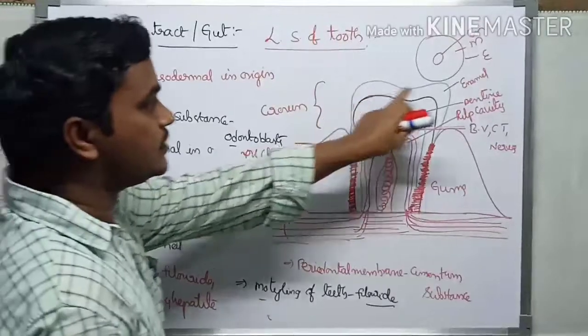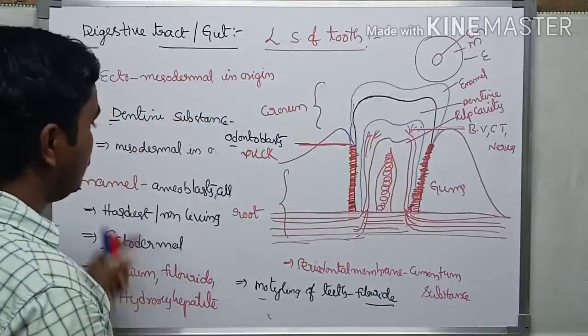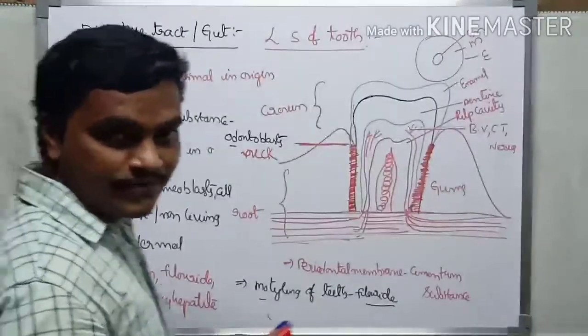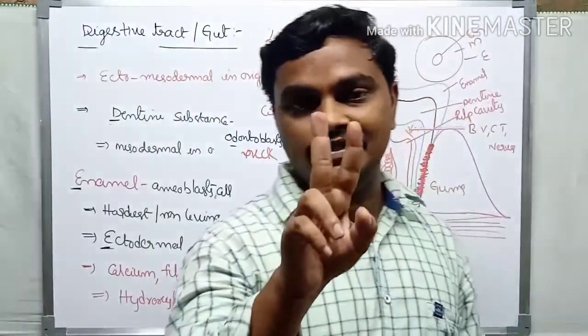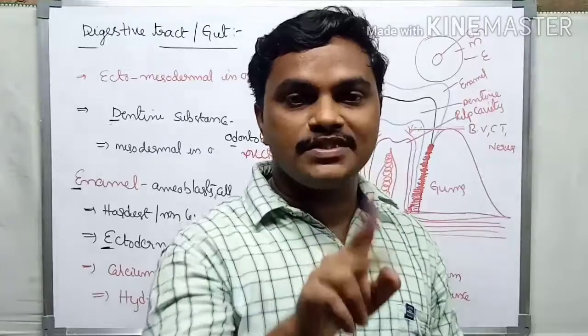In the crown region, let me show you the parts of tooth. So the main thing to remember is that tooth originates from two regions: ectodermal and mesodermal in origin, ectodermal region and mesodermal region.